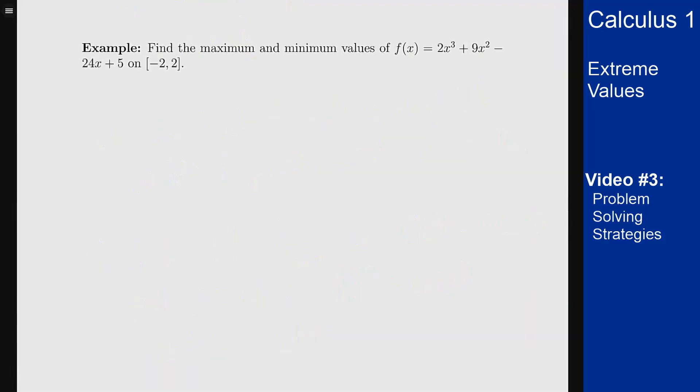As an example I want to find the max and minimum values of f(x) = 2x³ + 9x² - 24x + 5 on the interval [-2, 2]. So what I'm going to do is first look for the critical points. What does that mean? That means the derivative.